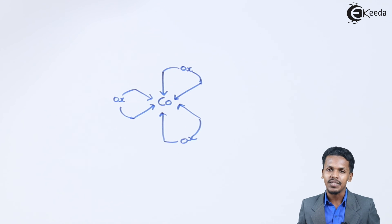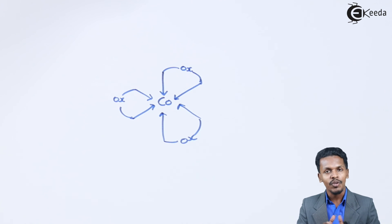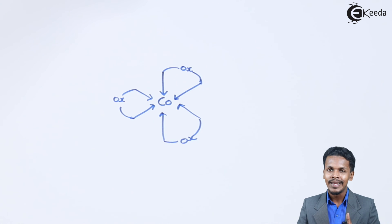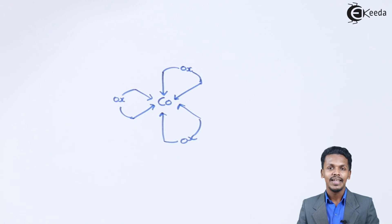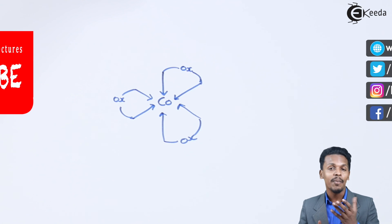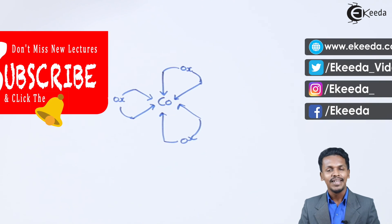Now let us talk about the magnetism. While looking at the electronic configuration of the complex, we have not observed any kind of unpaired electron. So we could say that the overall complex is basically diamagnetic in nature.